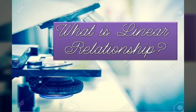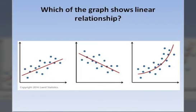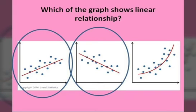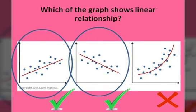Let us discuss the linear relationship first. I will show you three different pictures of a graph. Which of the graphs shows a linear relationship — is it graph A, B, or C? If your answer is both A and B, then your answer is correct. A and B show a linear relationship, and the third graph is not a linear relationship.